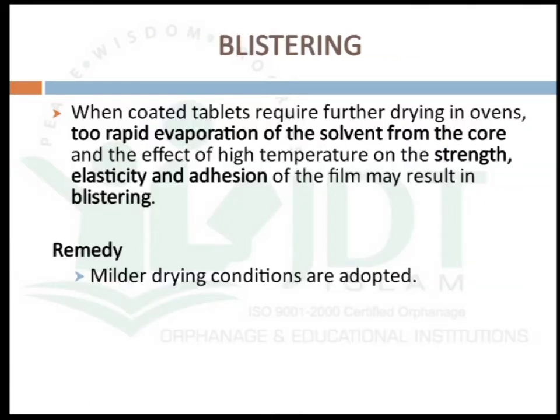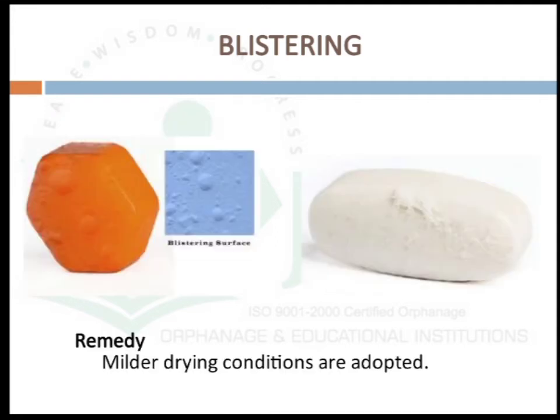The next defect is blistering. When coated tablets require further drying in an oven, too rapid evaporation of solvent from the core, combined with the effect of high temperature on the strength, elasticity, and adhesion of the film, may result in blistering. This can be rectified by adopting milder drying conditions. This is a picture showing the blistering defect.